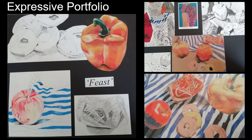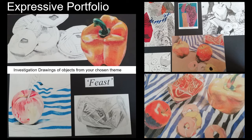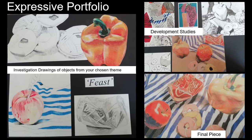Let's have a look at the course requirements first and what an expressive portfolio at National Five level looks like. It incorporates three A2 sheets: the first sheet would be your investigation drawings of objects from your chosen theme, individual drawings of them. The second would be development studies of these objects grouped together in different compositional arrangements using different materials and techniques.